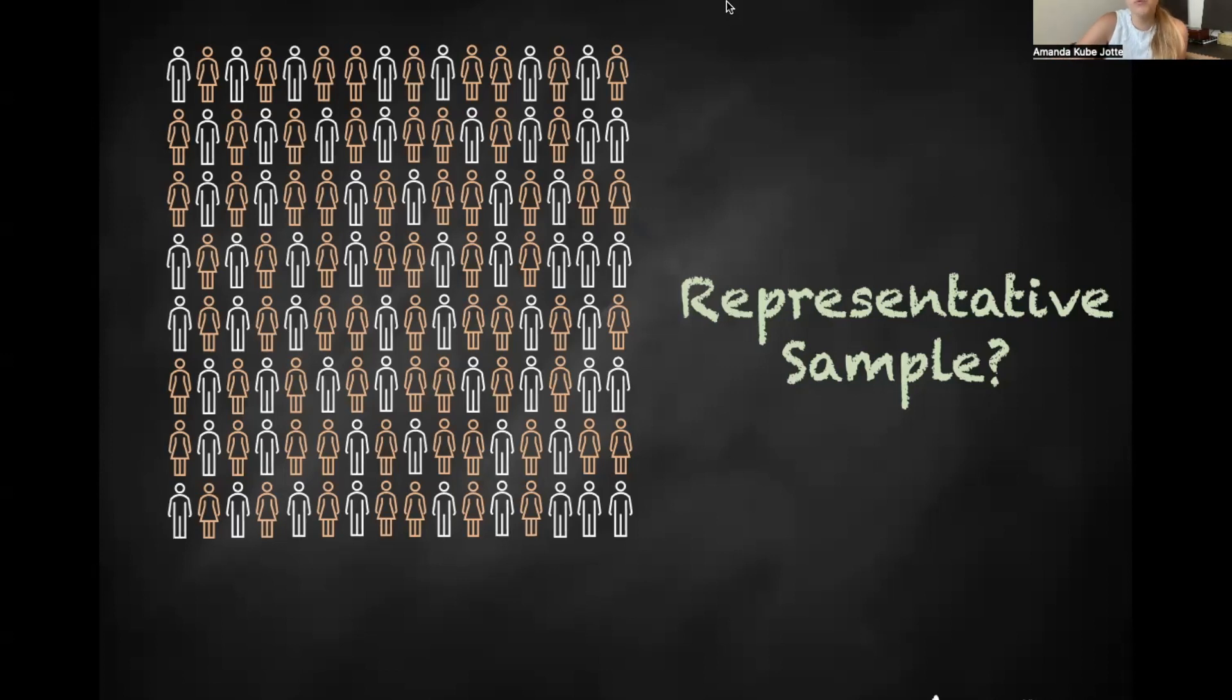So what we've covered so far is we've talked about what a statistic is, that it's a numerical characteristic of a sample. We've talked about the point of statistics, which is that we want to know something about a population, but we can't measure everyone in that population. So we have a sample, and we have to figure out how to get from our statistic to a better understanding of our parameter. Statistical inference is how we do that.